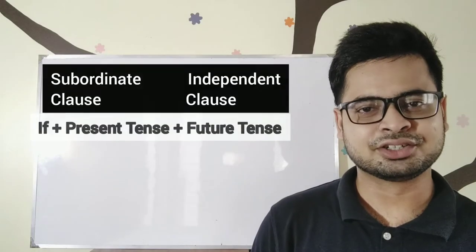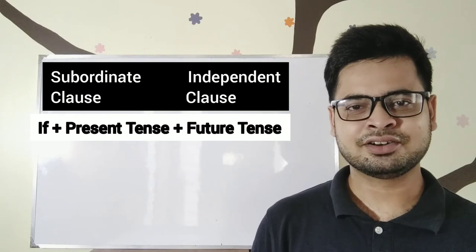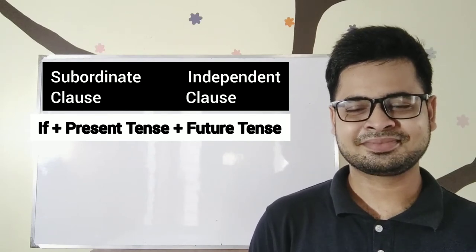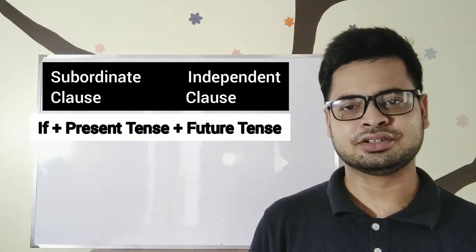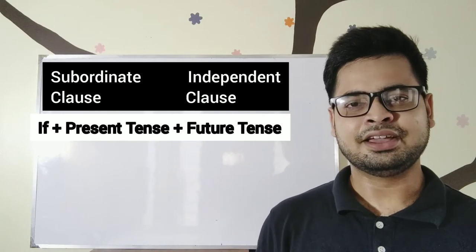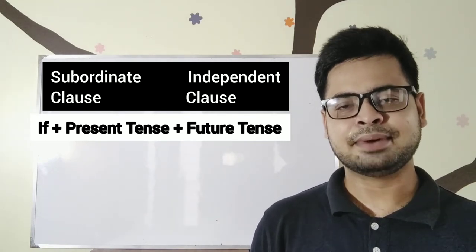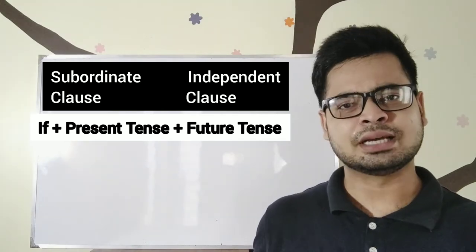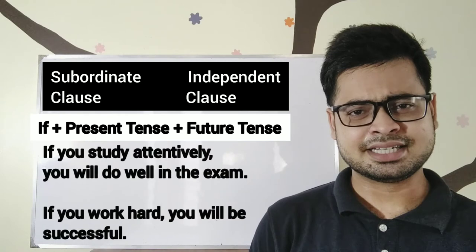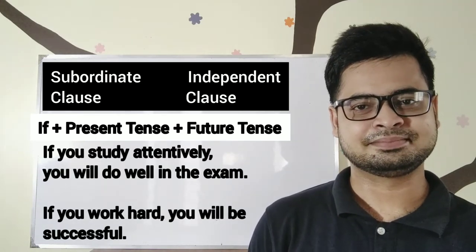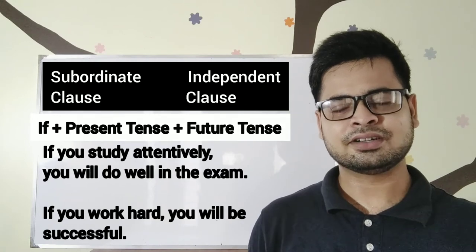A first conditional sentence is used to express a future imaginary situation on the basis of another situation which takes place in the present time. The future situation can be real or unreal. The structure is: if + present + future. That means, the subordinate clause will be in present tense and the independent clause will be in future tense. For example, if you study attentively, you will do well in the exam. If you work hard, you will be successful.